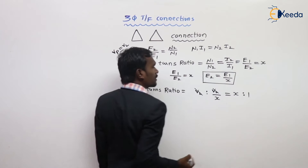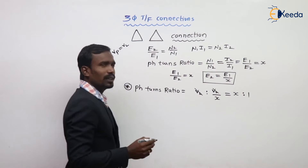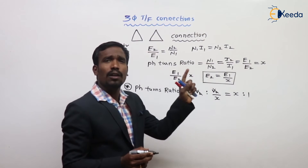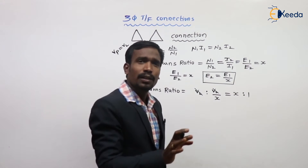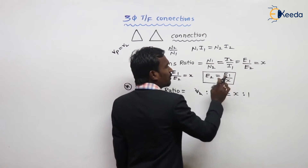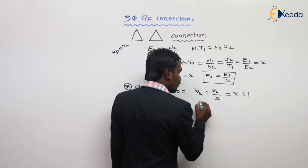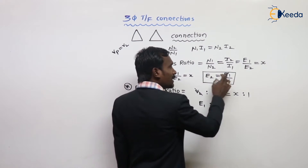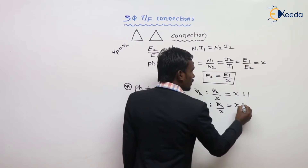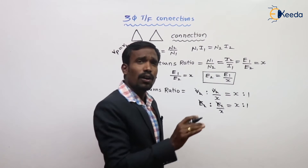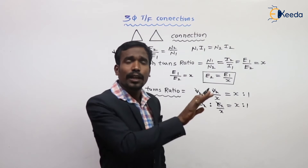Since both phase voltages equal line voltage, these two cancel out, so the phase turns ratio is X to 1. This phase turns ratio is common for all configurations — no need to worry. Always, E2 equals E1/X, and taking the ratio of phase voltages, the phase turns ratio is always X to 1 for all configurations. This is constant.